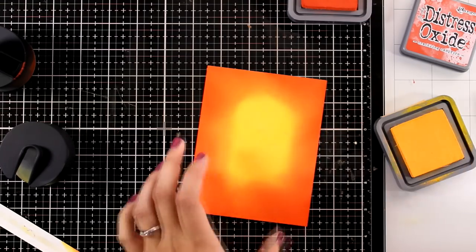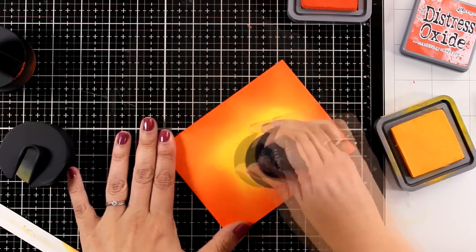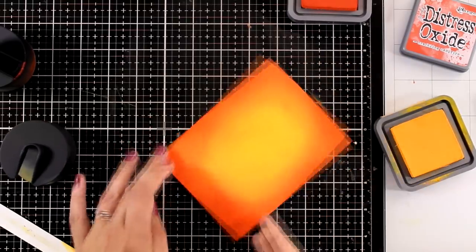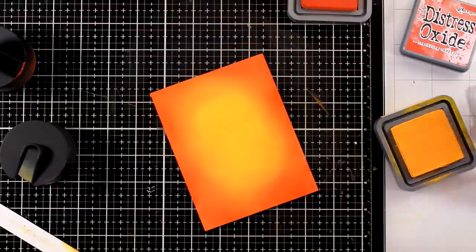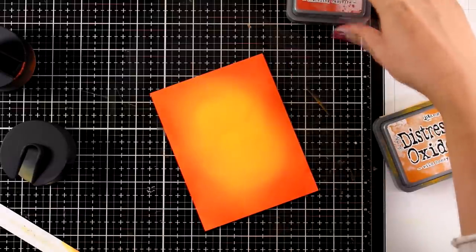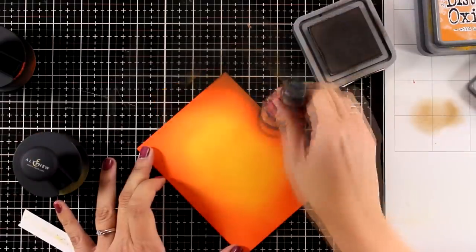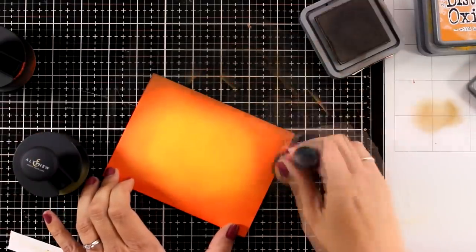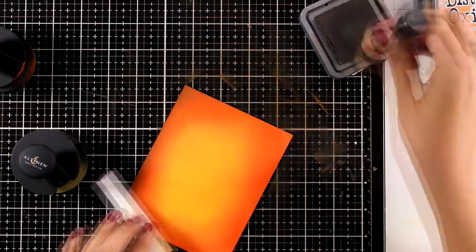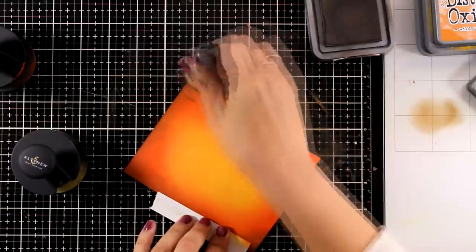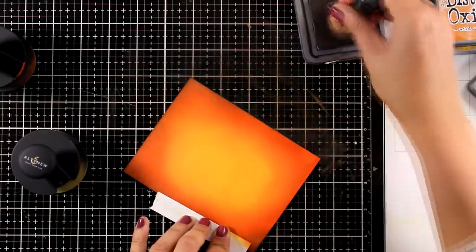I'm going back to Wild Honey and I'm going to blend one more time over where those two colors meet so you get a very smooth blending. Now finally I'm going to go to the darkest of the colors that I grabbed and that's Ground Espresso. I'm going to add some darker edges. For that I'm using a smaller brush since I don't want to go as far towards the center as I did with Crackling Campfire.